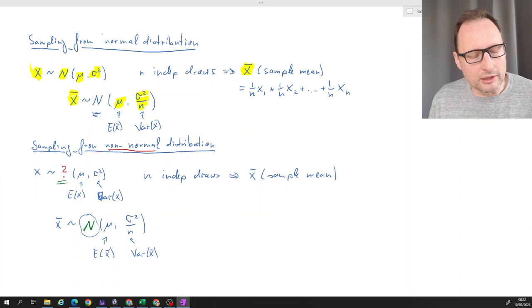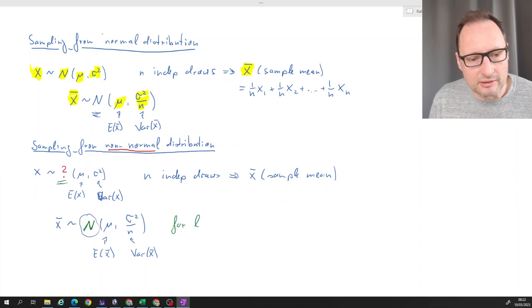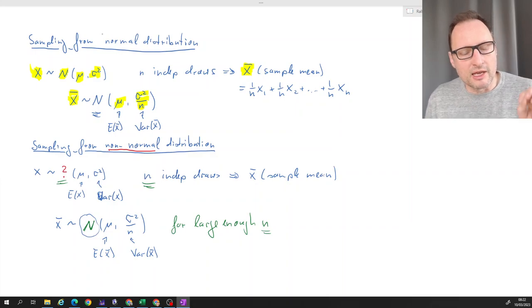So regardless of that distribution, the distribution of x̄ is normal for large enough n. For large enough sample sizes, this is normally distributed.